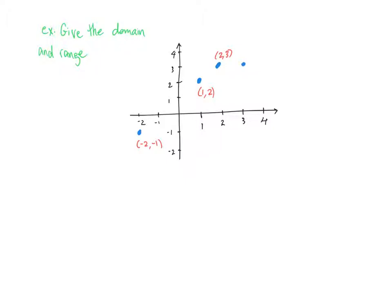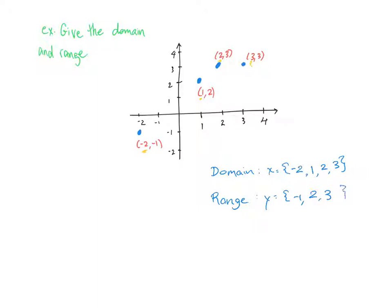And finally we have 3, 3. Now once we have all the coordinate pairs, this question becomes exactly like the question we just did, where we list the possible x values for domain and the possible y values for range. So our possible x values are negative 2, 1, 2, 3 — going from left to right. And now we can list our range, our y values. Our possible y values are negative 1, 2, 3. We don't have to write 3 twice, even though we see it twice, because all we need to know is that it's a possible y value.